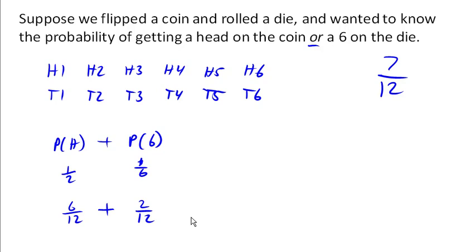Because we're counting 1, 2, 3, 4, 5, 6 for the heads. And we're counting 1, 2 for the 6s. But we've counted this value twice. So in order to compensate for that, we're going to have to subtract out that value that we double counted.